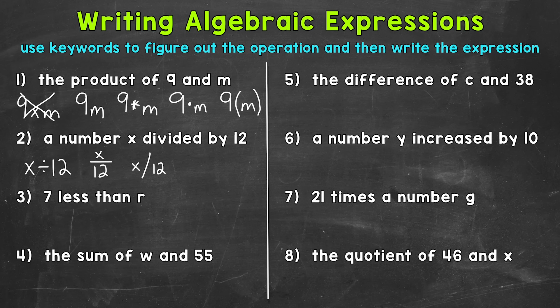Number 3: 7 less than R. This one we switch the order. We need to think 'less than' — we are taking 7 less than R. So this is going to be subtraction, and it's R minus 7. Whenever we see 'less than,' we actually switch the order: R comes first and 7 comes second. We are taking 7 less than that R, so switch that order.